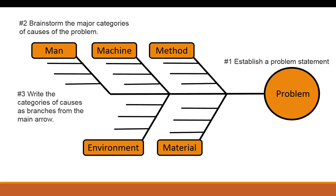Next, you go into the brainstorming session. At this point you're writing down, under each category, the potential causes that fall under it. Once set up, you look at the methods and things in your organization that could have possibly led to the problem. One thing you don't want is for the fishbone diagram to get too out of control, because it can backfire — one potential cause can branch into other reasons, leading to more and more granular detail. So it can keep breaking down as you go through the problem.